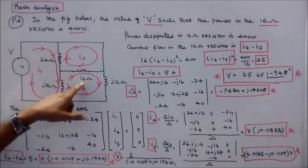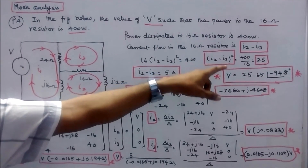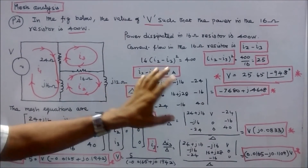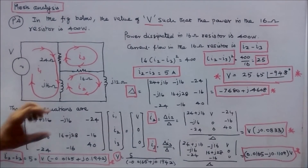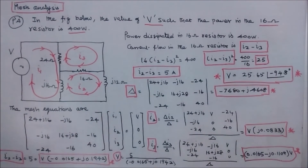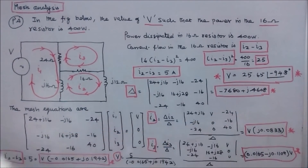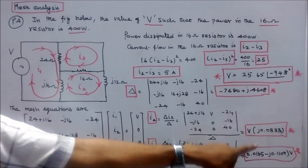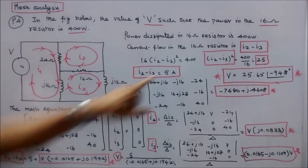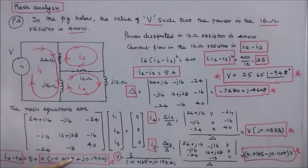Setting up the power condition: R × |i2 minus i3|² = 400, where R = 16. So |i2 minus i3|² = 400/16 = 25, meaning i2 minus i3 = 5 amps. Applying Cramer's rule, delta = minus 7680 + j4608. Solving, i2 = V × j0.0833 and i3 = V × (0.0165 minus j0.1109). Therefore, i2 minus i3 = V × (minus 0.0165 + j0.1942) = 5.